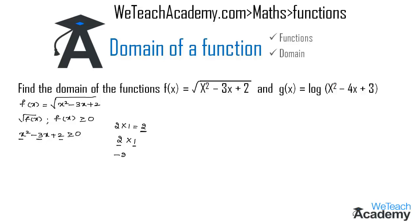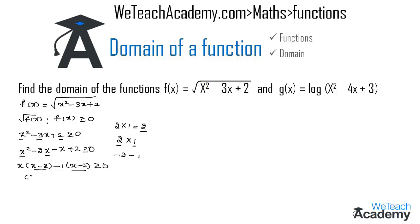If we add minus 2 and minus 1 we get minus 3. So we can write this expression as x² - 2x - x + 2 ≥ 0. Taking x as a common factor from the first two terms gives x(x - 2), and taking minus 1 as a common factor gives minus 1(x - 2) ≥ 0. Now taking (x - 2) as a common factor we get (x - 2)(x - 1) ≥ 0.